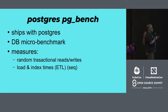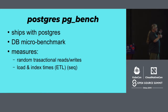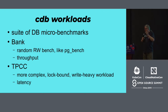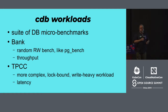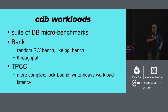Postgres pgbench is a super simple database benchmark that ships with Postgres. It measures two things: random transactional reads and writes, and load and index times simulating a data load analytics workload. The CockroachDB team created a nice suite of light benchmarks including 'bank', which is a lot like pgbench, and 'tpcc', which is a much more complex, write-heavy workload with a lot of locking and lock conflicts — a common problem in databases. Bank was really good for measuring throughput, and tpcc was really good for measuring latency for complex transactional operations.